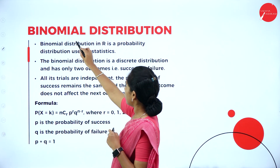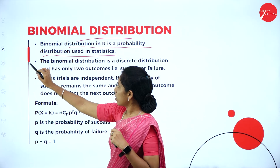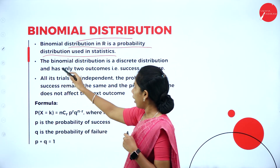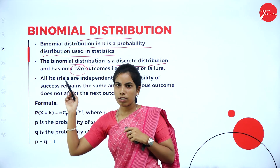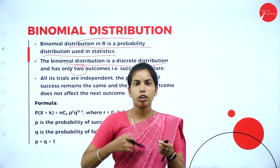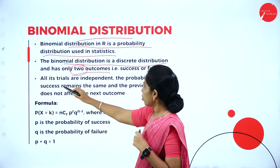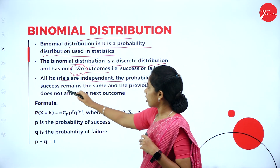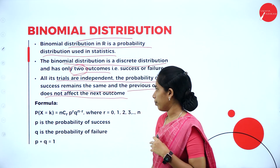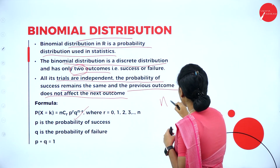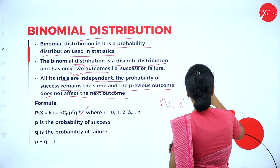The first distribution is binomial distribution. A binomial distribution is a probability distribution used in statistics. It is a discrete distribution with only two outcomes — this is important to concentrate on. For binomial, we only consider two predictions or two outcomes. All trials are independent, the probability of success remains the same, and the previous outcome does not affect the next outcome. Here you can see one formula involving NCR.